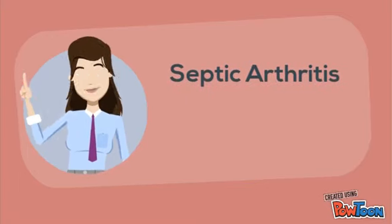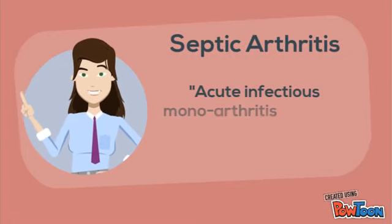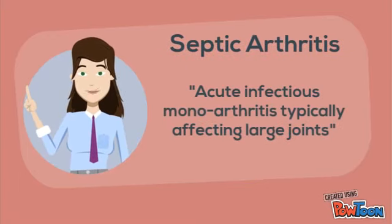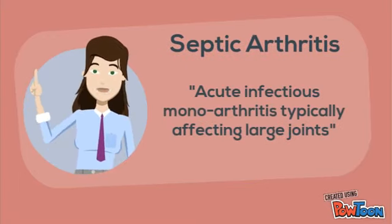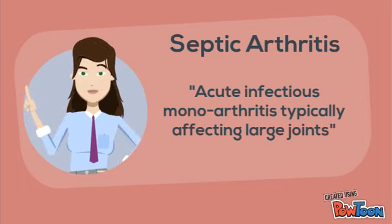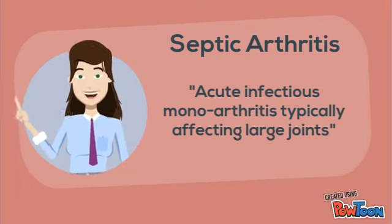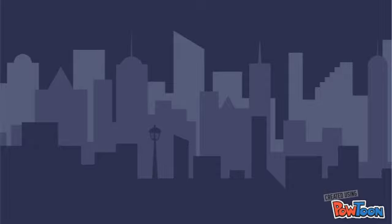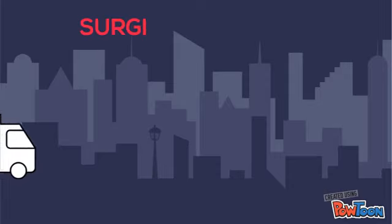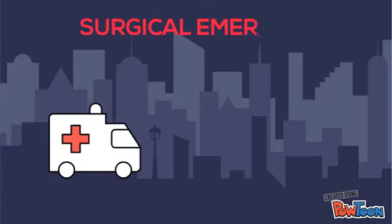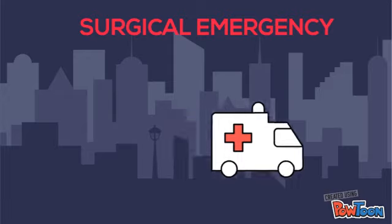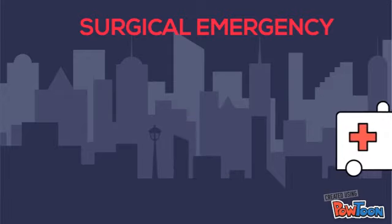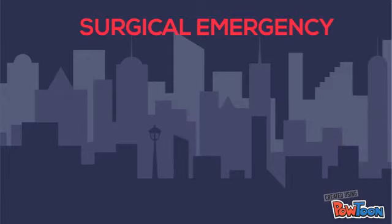Septic arthritis is an acute infectious monoarthritis typically affecting large joints such as the knee and hip. Septic arthritis is a diagnosis not to be missed — it is a surgical emergency and if left untreated causes irreversible damage to a joint.